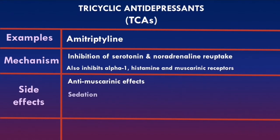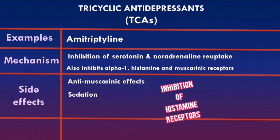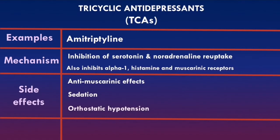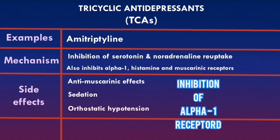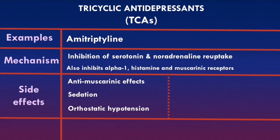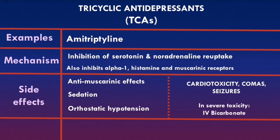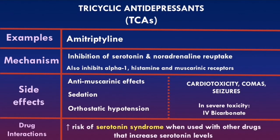TCAs can be very dangerous in overdose, leading to cardiotoxicity, coma, and seizures. TCA overdose can cause dangerous arrhythmias such as ventricular fibrillation. In severe toxicity, intravenous bicarbonate can be given to reduce the risk of arrhythmias and seizures. TCAs can also increase the risk of serotonin syndrome when used with other serotonergic drugs, and TCAs in particular carry a very high risk, so it is important to be cautious when switching patients from other antidepressants to a TCA.